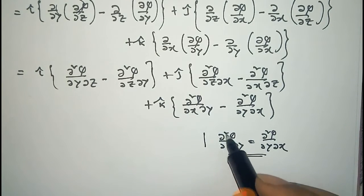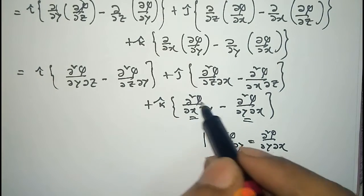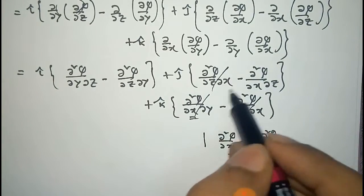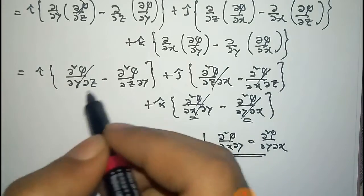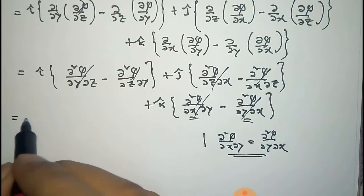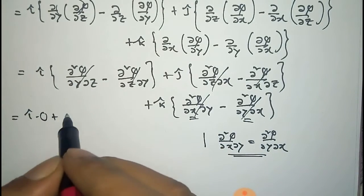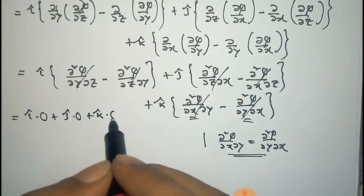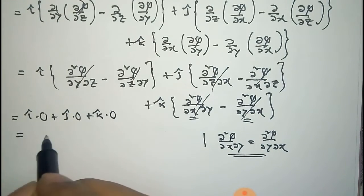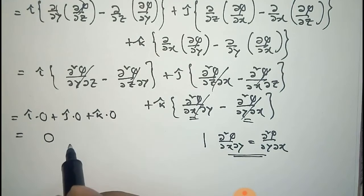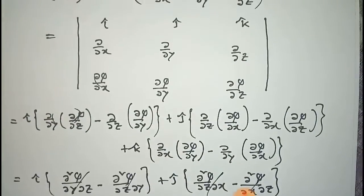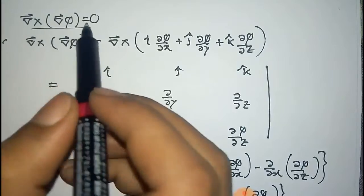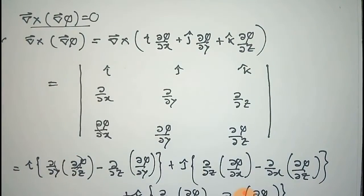Under this condition, the mixed partial terms cancel out pairwise. So it becomes i-cap times 0 plus j-cap times 0 plus k-cap times 0, and the total result is 0. Thus we have proved that curl of gradient phi equals 0.